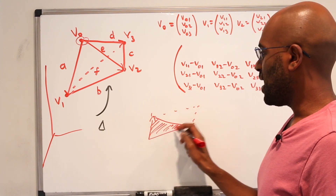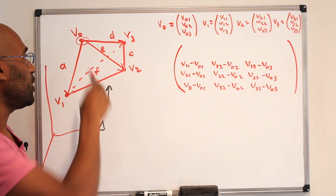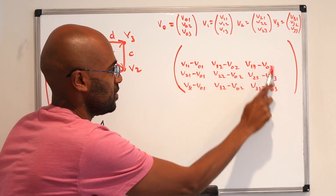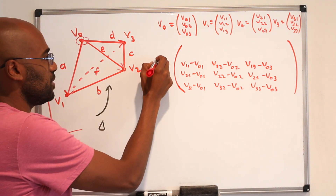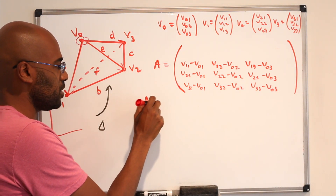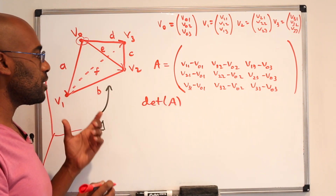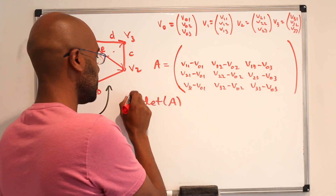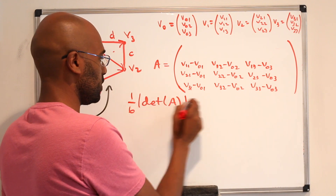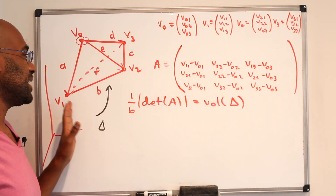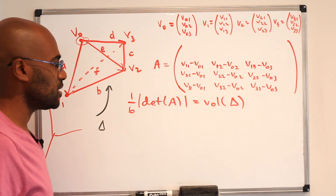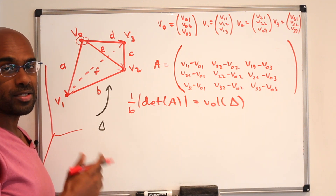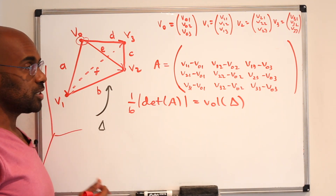The area of the triangle in 2D is one half of that. Similarly in 3D, the volume of the parallelepiped spanned by these three vectors is the determinant of the matrix A formed by v₁−v₀, v₂−v₀, and v₃−v₀. The volume of the tetrahedron itself is one sixth times the absolute value of det(A). This is discussed in linear algebra courses and also in multivariable calculus when covering Jacobians.